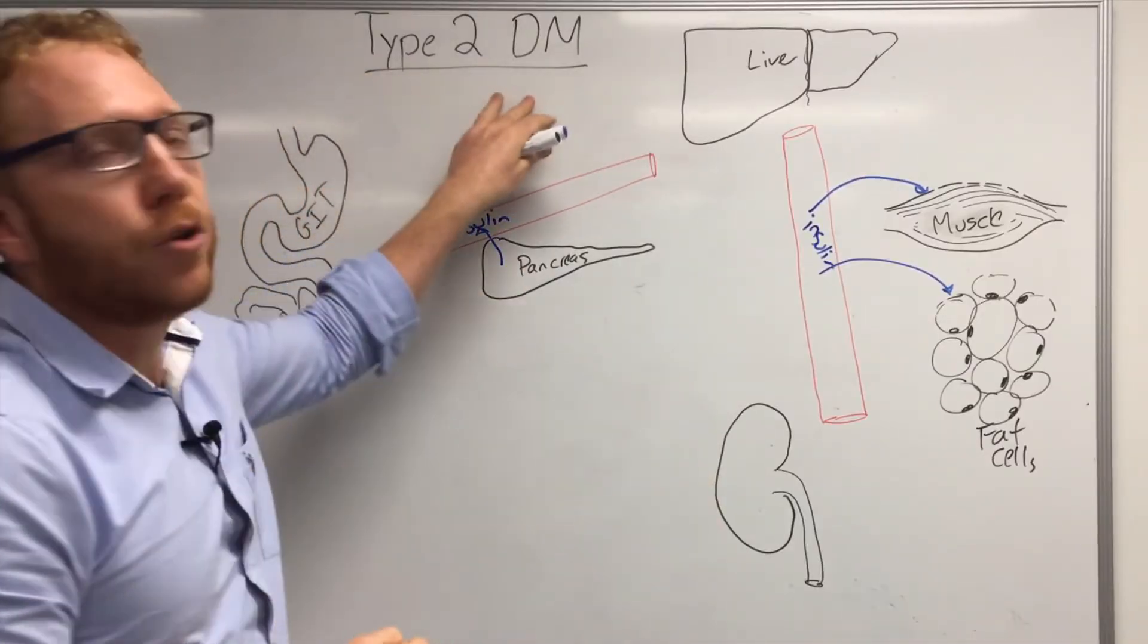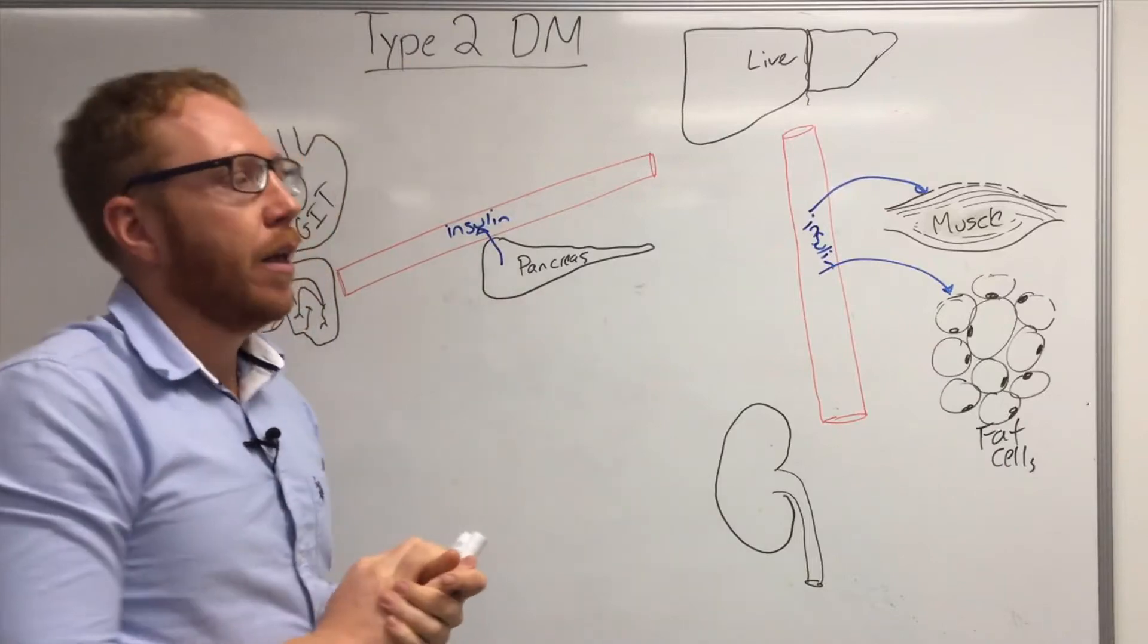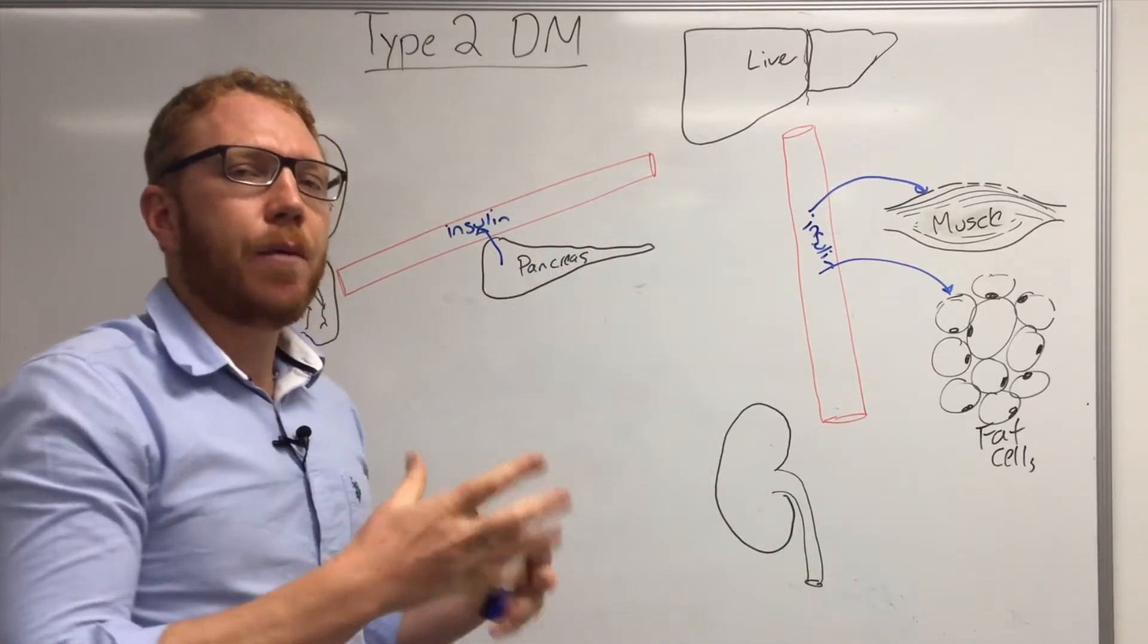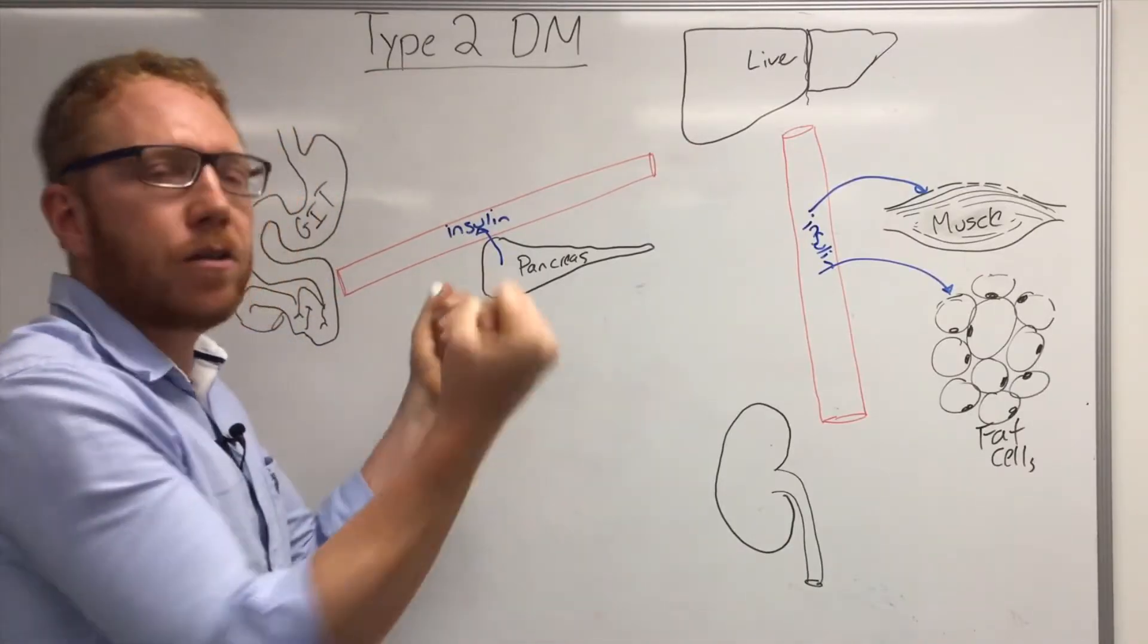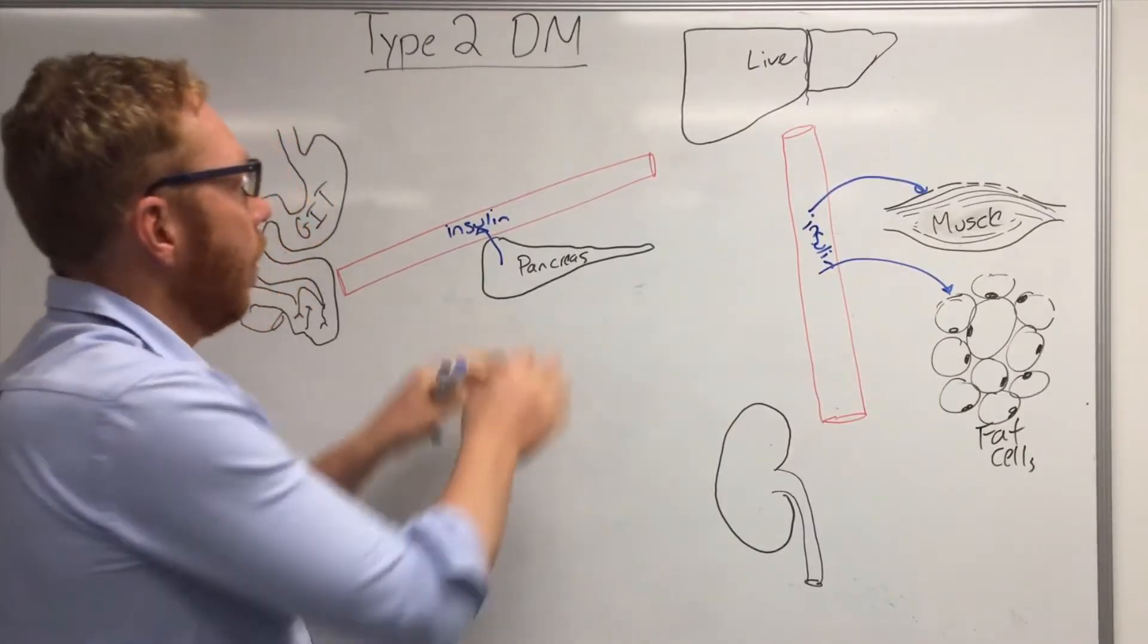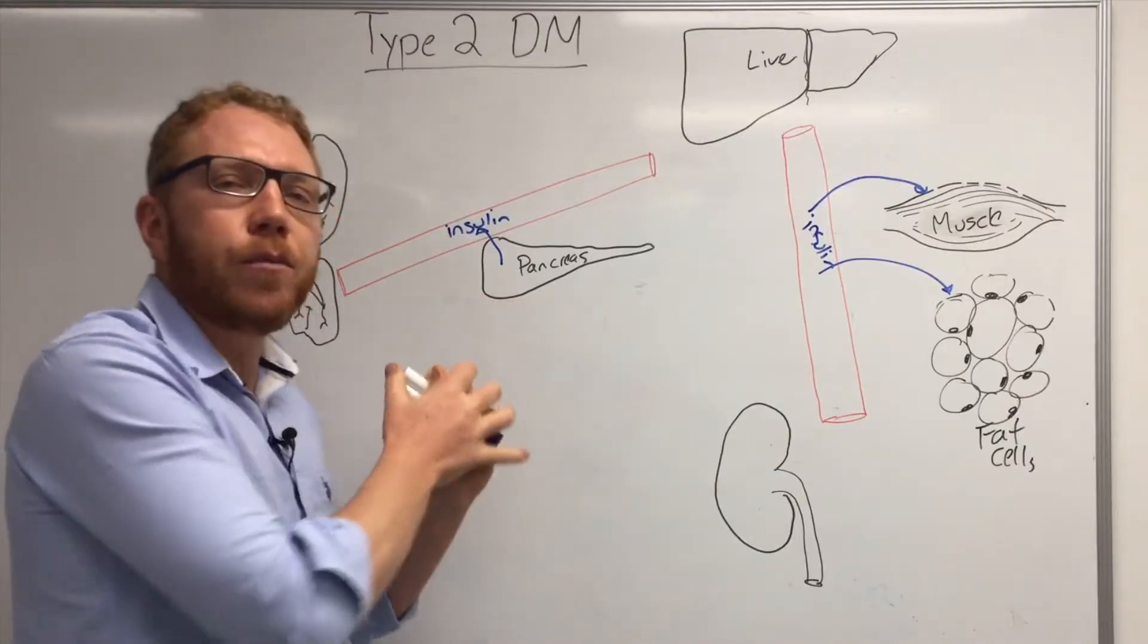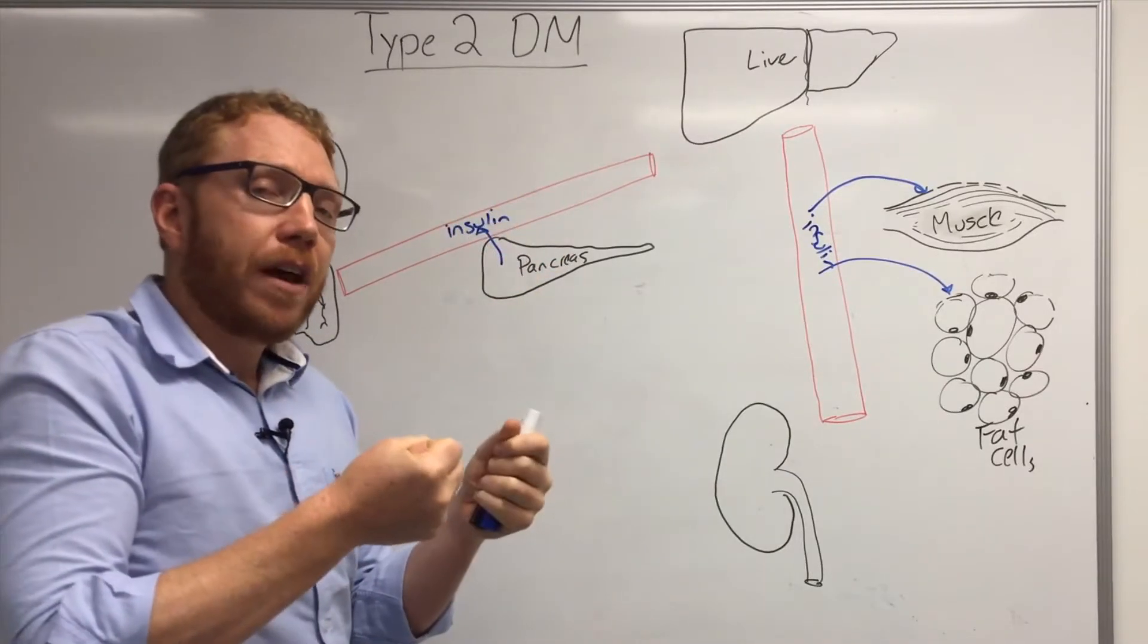Now in the state of type 2 diabetes however, there's generally two problems that come about. Either the cells in the body become insensitive to insulin, so they don't react to it, therefore the channels don't open, therefore glucose doesn't go in. Or the pancreas just doesn't release enough insulin anymore. Or it could be a combination of both.